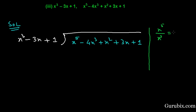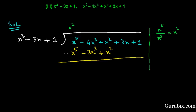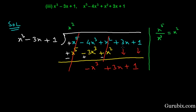Then we have positive x squared, so the first term in the quotient is positive x squared. Now we shall multiply all the terms of the divisor by x squared, giving x to the fifth power minus 3x cubed plus x squared. We change the signs: minus 5x cubed, positive 3x squared, minus x squared. Cancelling terms, we remain with minus x cubed. The other term cancels, and we remain with positive 3x plus 1. Bring down these two terms.